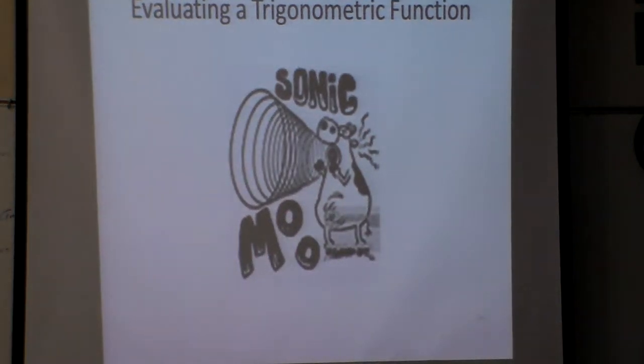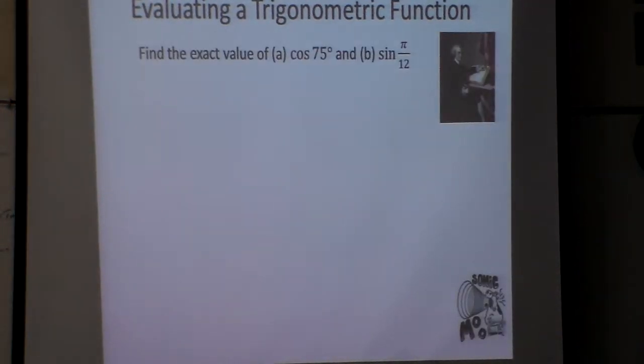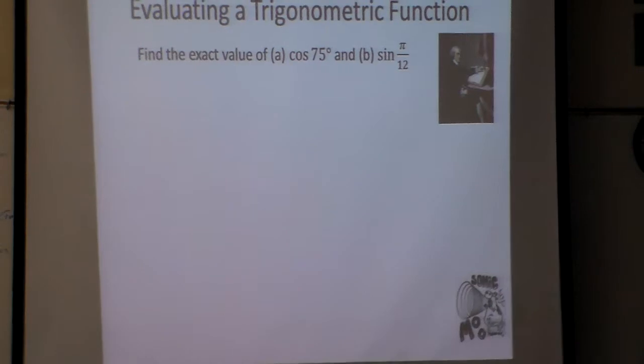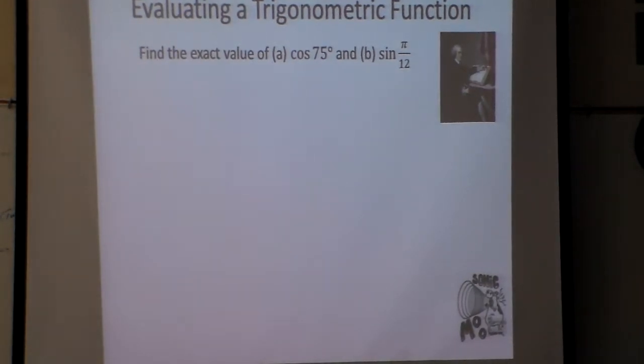Okay, we're going to evaluate a trigonometric function, and what we're going to do is find the exact value of the cosine of 75°. So we're not going to go to our calculator and type in cosine 75 enter. What we're going to do is use a formula.